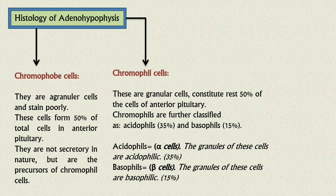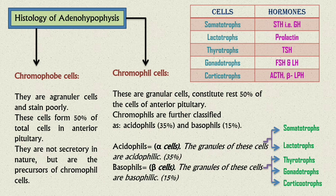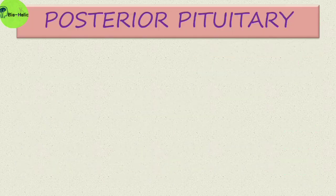Acidophils are of two types: somatotrophs and lactotrophs. Basophils are of three types: thyrotrophs, gonadotrophs, and corticotrophs. These different cell types secrete different hormones: somatotrophs secrete somatotropic hormone (growth hormone); lactotrophs secrete prolactin; thyrotrophs secrete thyroid-stimulating hormone; gonadotrophs secrete follicle-stimulating hormone and luteinizing hormone; and corticotrophs secrete ACTH and beta-LPH.